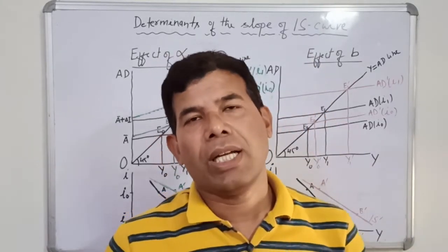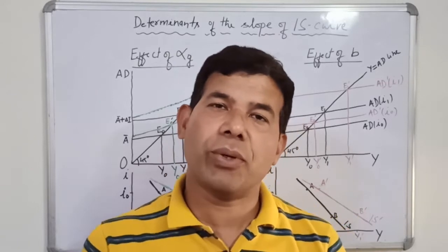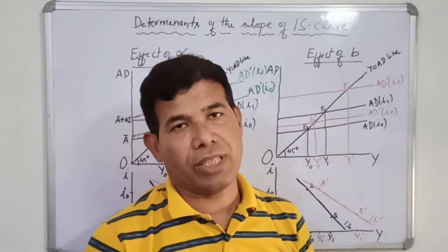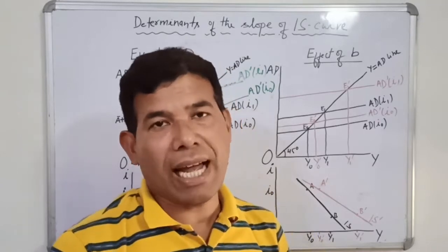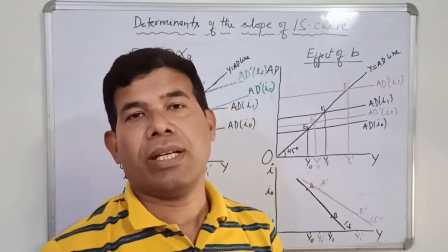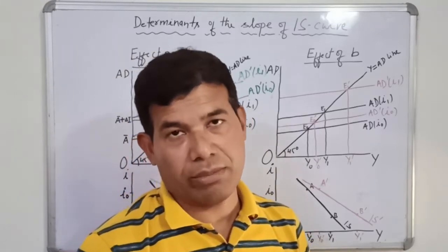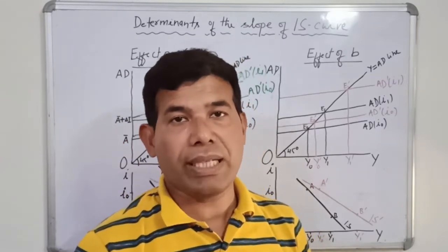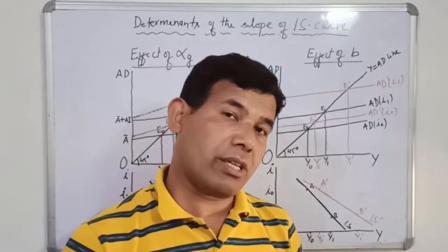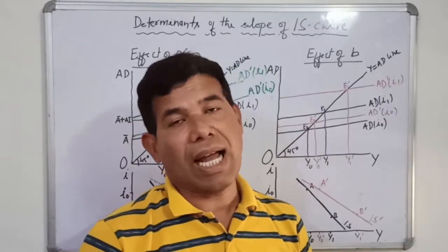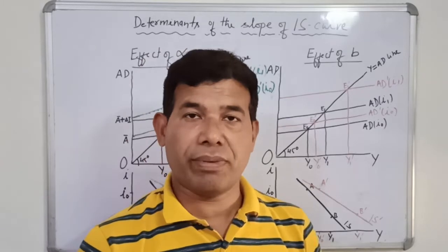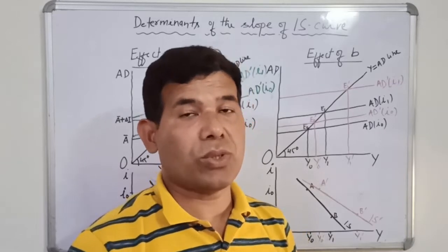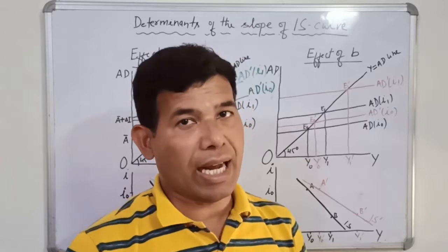Hello friends, welcome to this lecture where we are going to discuss about the factors which affect the slope of IS curve — the determinants of the slope of IS curve. You must have learned how to derive IS curve and LM curve. We also need to know the factors which affect the slope of IS curve and the slope of LM curve, because it is the slope which is going to decide the effectiveness of fiscal policy and monetary policy.